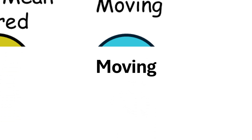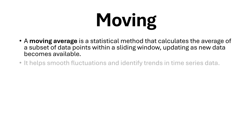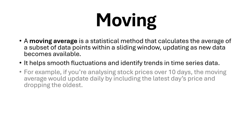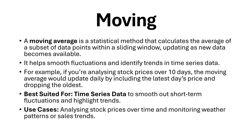Moving average. A moving average is a statistical method that calculates the average of a subset of data points within a sliding window, updating as new data becomes available. It helps smooth fluctuations and identify trends in time series data. For example, if you're analyzing stock prices over 10 days, the moving average would update daily by including the latest day's price and dropping the oldest. Best suited for time series data to smooth out short-term fluctuations and highlight trends. Use cases: analyzing stock prices over time and monitoring weather patterns or sales trends.